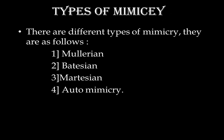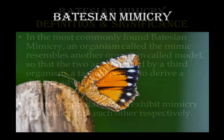There are four types of mimicry: one, Mullerian; second, Batesian; third, Martation; and the fourth one is automimicry. Out of these four types of mimicry, only two are included in our FYBSC syllabus, so we will consider Batesian and Mullerian mimicry one by one.